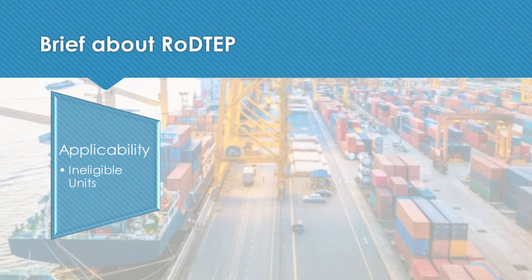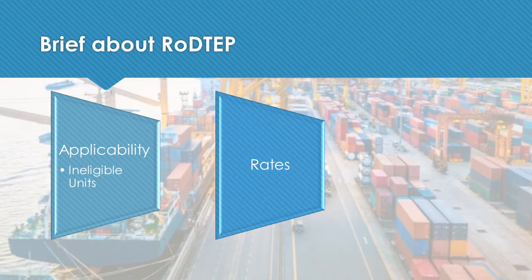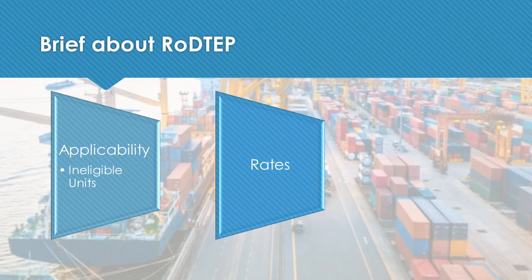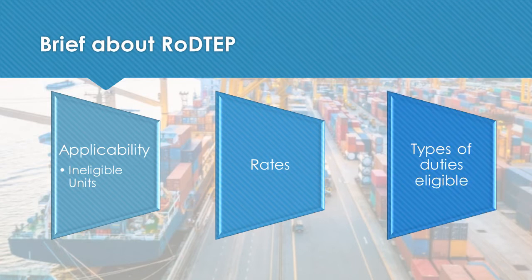There are around 15 items specified as ineligible, including 100% EOUs, deemed exports, and SEZs. Regarding rates, on 17th August, tariff rates were specified covering 8,555 tariff lines, primarily based on percentage of FOB value. The average rates range from 0.01% to 4.5%, which is lower compared to the earlier MEIS scheme where average rates were from 2% to 7%.